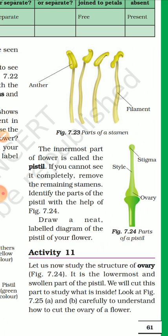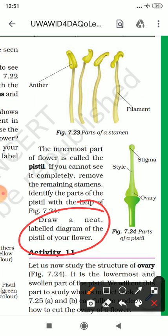Next topic is parts of the pistil. The innermost part of the flower is called the pistil. If you cannot see it completely, remove the remaining stamen. Identify the parts of the pistil with the help of the figure. Draw a neat labeled diagram of the pistil of your flower. The three parts of the pistil are stigma, style, and ovary.